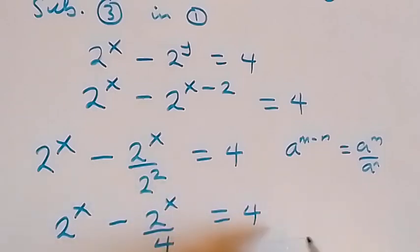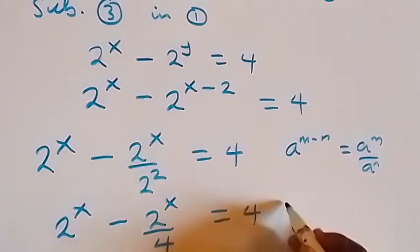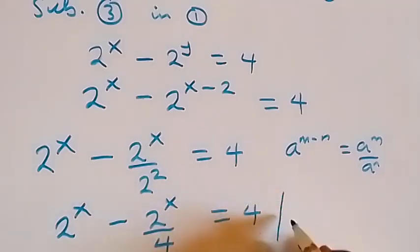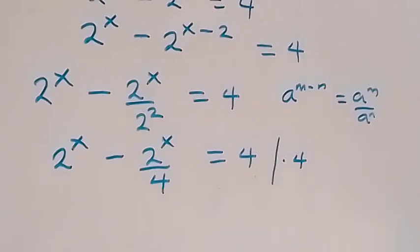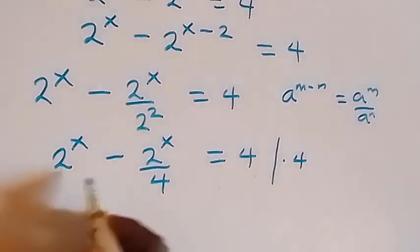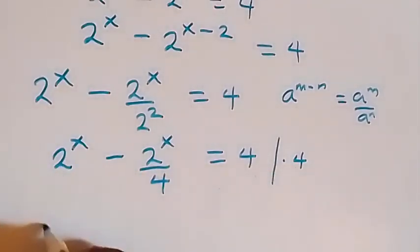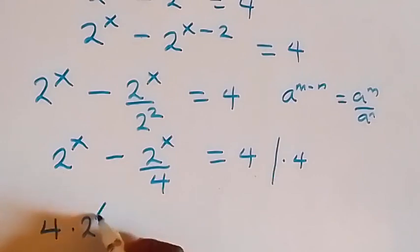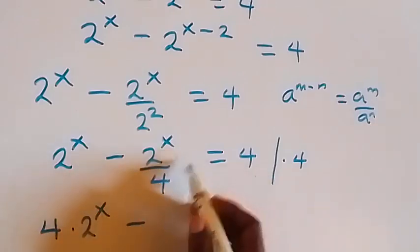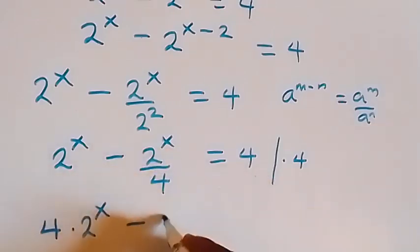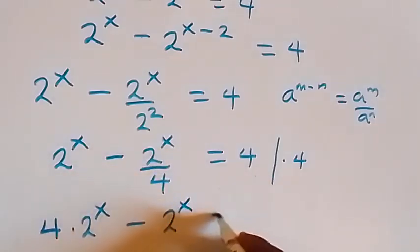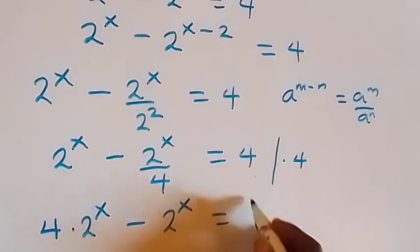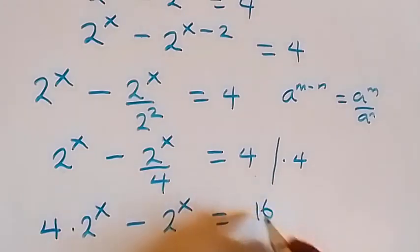So here, we can multiply both sides by 4. We have 4 times 2 raised to power x minus 2 raised to power x equals to 4 times 4, which is 16.